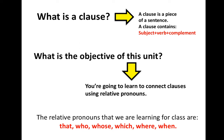Remember that we use 'that' for people or things. We use 'who' for people. We use 'whose' when we have a possessive adjective. We use 'which' for things. We use 'where' for places, and we use 'when' when we talk about time.